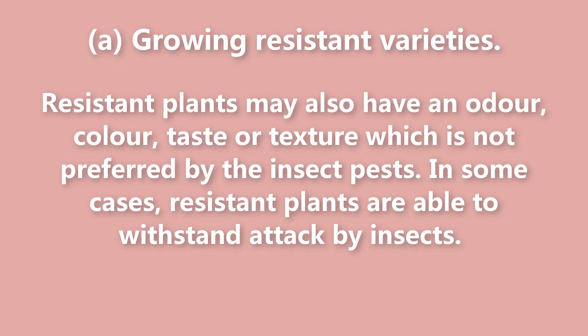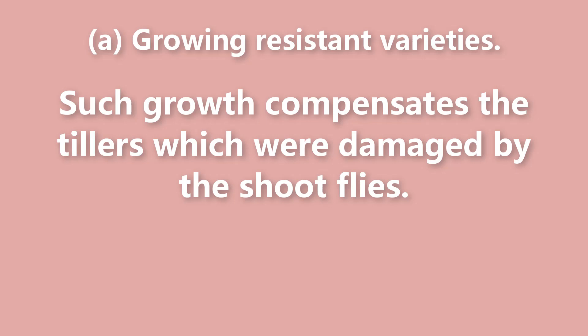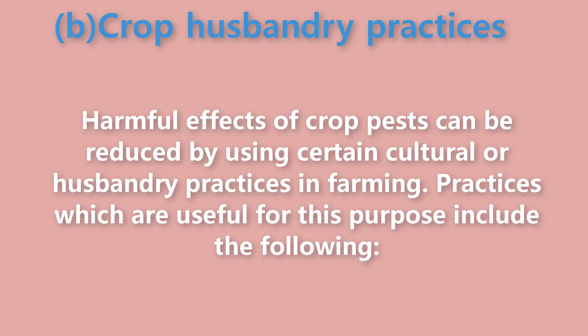Resistant plants may also have an odor, color, taste or texture which is not preferred by the insect pests. In some cases, resistant plants are able to withstand attack by insects. For example, when sorghum shoot fly attacks sorghum plants, if favorable soil and moisture conditions are present, the plants may grow vigorously producing a lot of tillers. Such growth compensates the tillers which were damaged by the shoot flies.